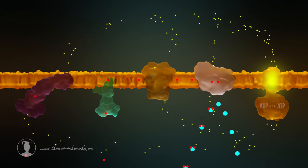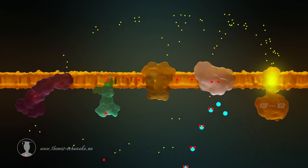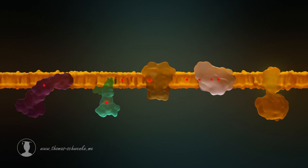If oxygen were no longer available, the electrons would no longer be able to flow out of complex IV. Due to the congestion of electrons, the complexes can no longer pump protons to the other side. The ATP synthase would no longer produce ATP.